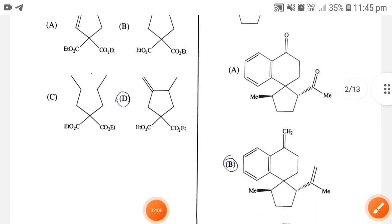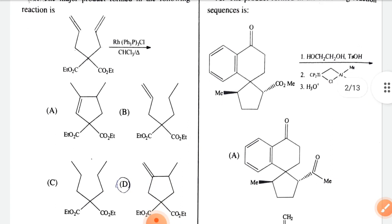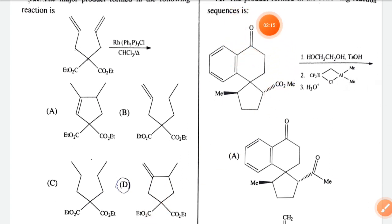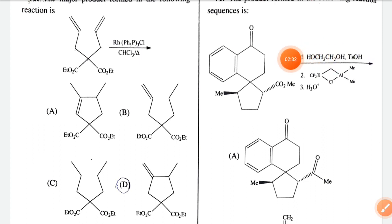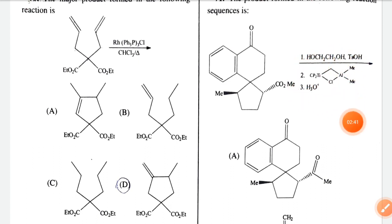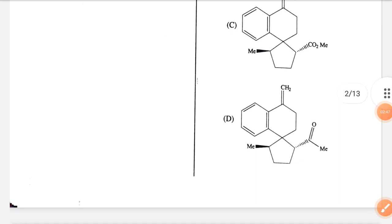Next question: the product formed in the following reaction. One carbonyl group and another C=O2Me are present. First, TsOH is given — this reagent is used for protection of the carbonyl group. Then TIPB reagent is given. The correct option is option B.